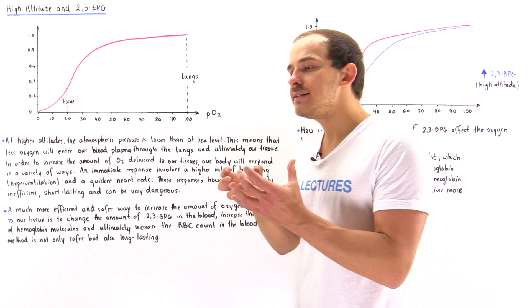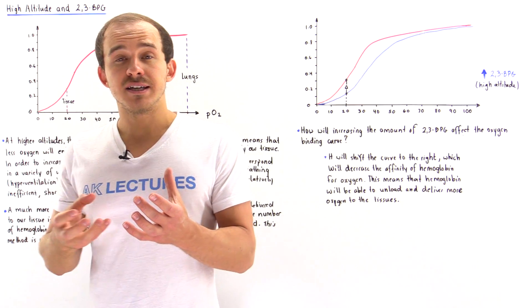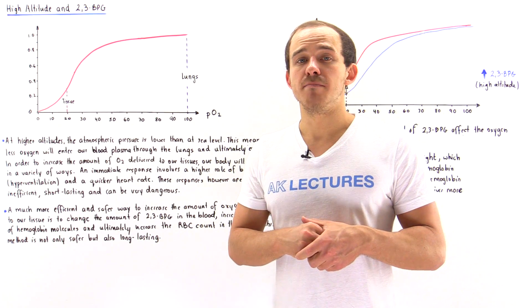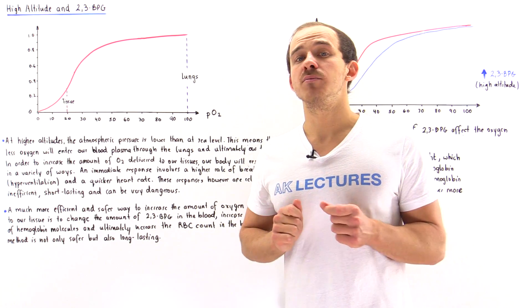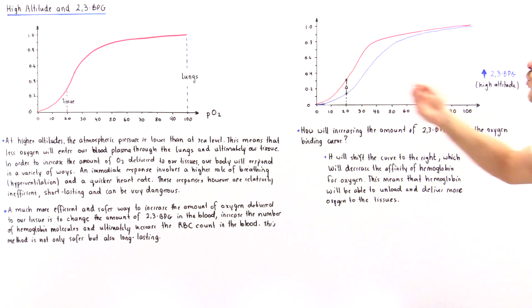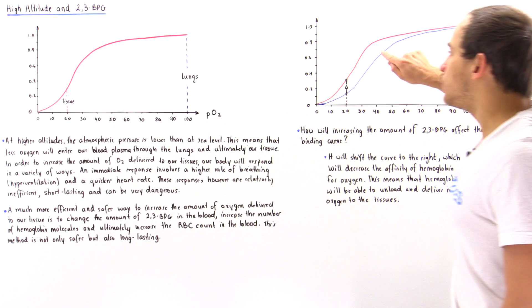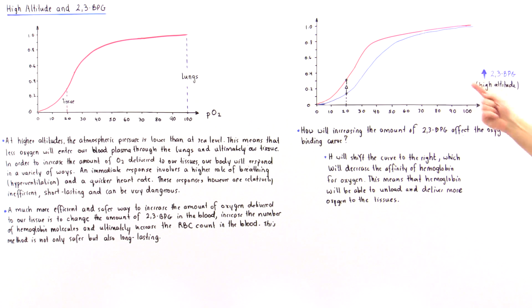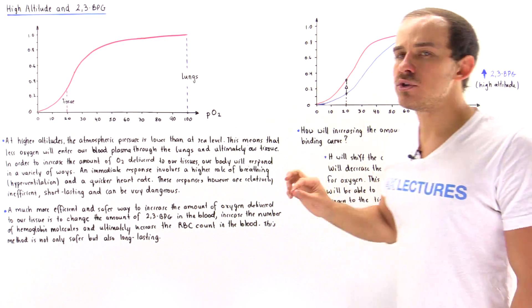By binding to the center pocket of deoxyhemoglobin, the 2,3-BPG stabilizes the T-state of that deoxyhemoglobin molecule. That lowers deoxyhemoglobin's affinity for oxygen, and that means this entire curve is shifted to the right side. The red curve describes this initial curve, and the blue curve describes a few days following the exposure to high altitude, when the concentration of 2,3-BPG increases. By increasing 2,3-BPG, we basically shift the entire curve to the right side, and that decreases the affinity of hemoglobin for oxygen.